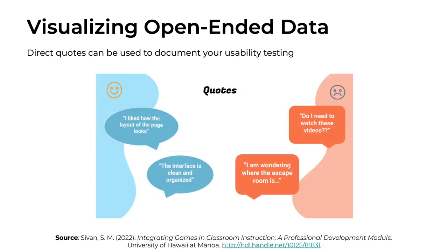Here's another way to showcase open-ended data. This is an example from Sasha, who decided to share direct quotes from her participants' open-ended responses. She pulled four quotes about the usability of her instructional product. The ones in blue are positive in sentiment: 'I like how the layout of the page looks,' and another person said, 'The interface is clean and organized.' Sasha then complemented these positive comments with two negative ones: 'Do I need to watch these videos?' and 'I am wondering where the escape room is.' Using direct quotes can be a good way to showcase some of your open-ended usability data.